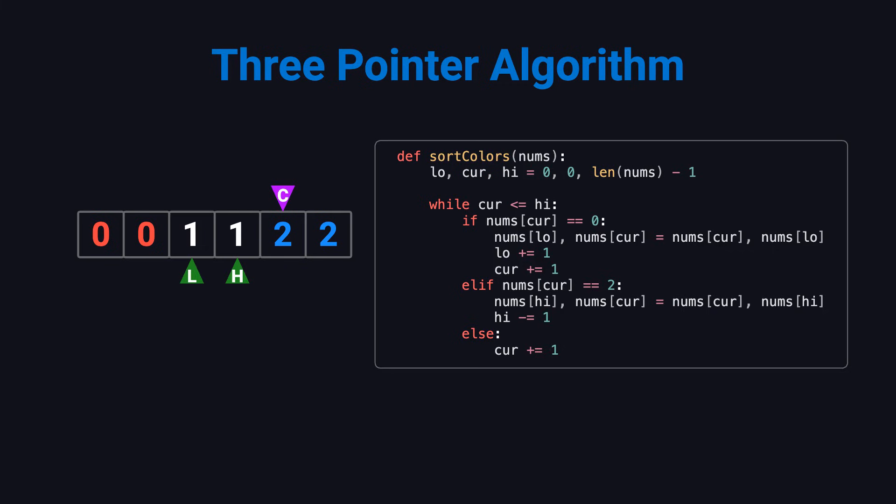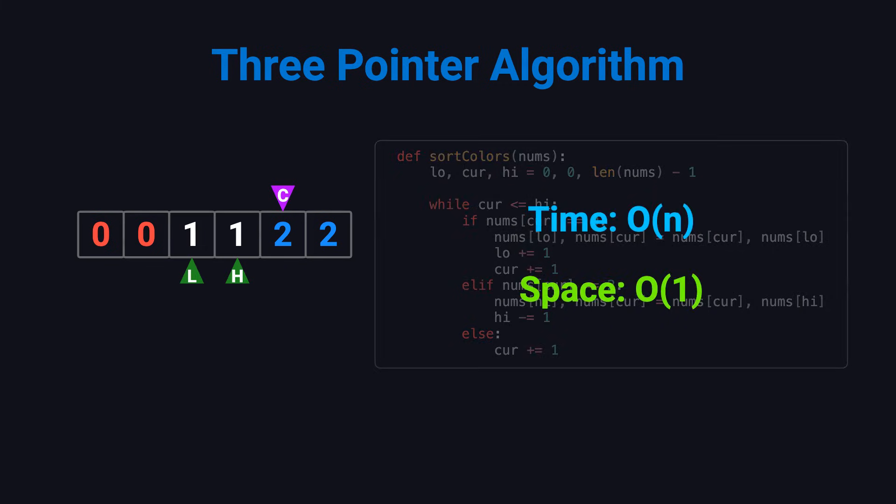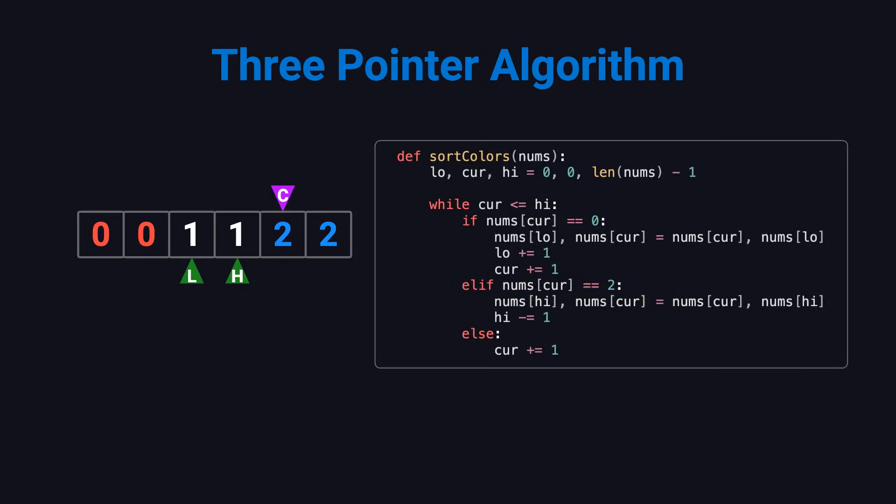This algorithm scans the array only once, runs in O(N) time, and uses O(1) extra space. The beauty of it is that throughout the process, the left side always contains only 0s, the right side always contains only 2s, and the middle is gradually resolved as current moves forward. That's the Dutch national flag algorithm, and it's a must-know technique for coding interviews.